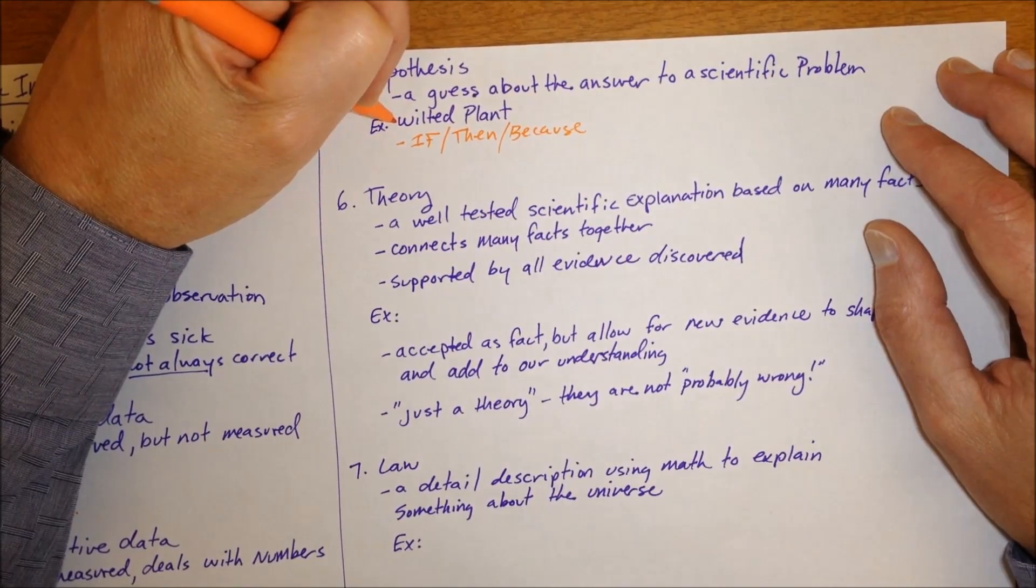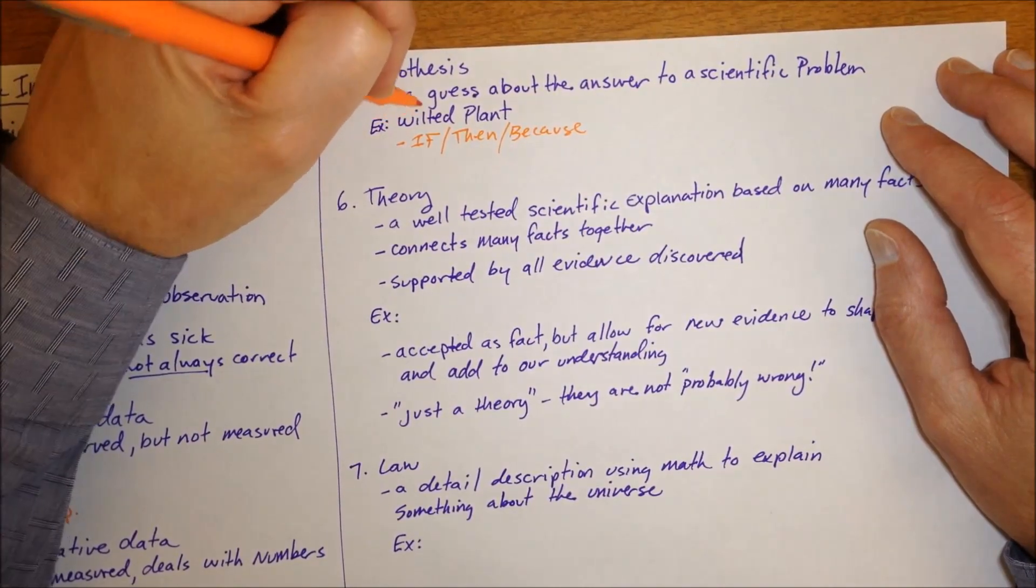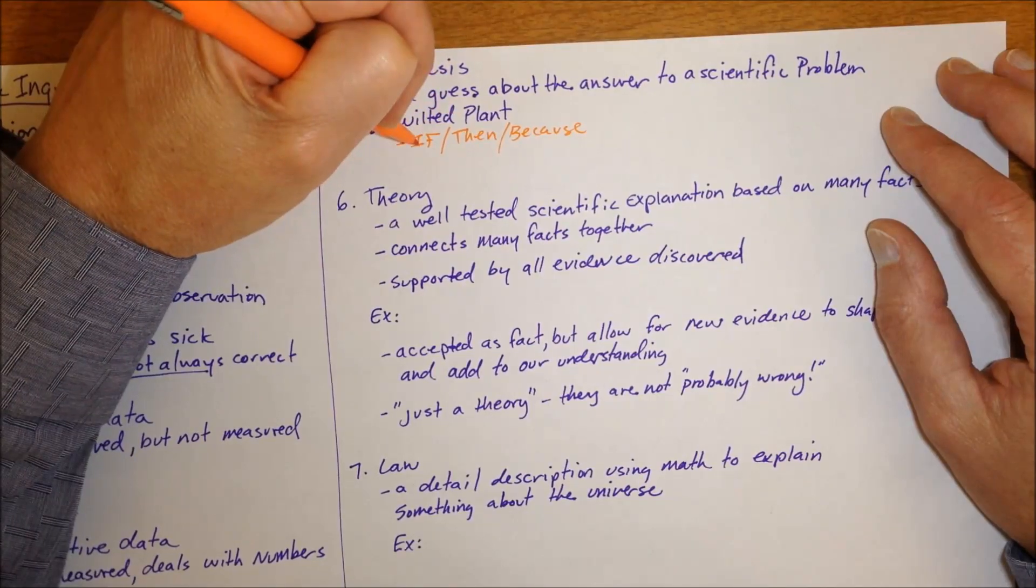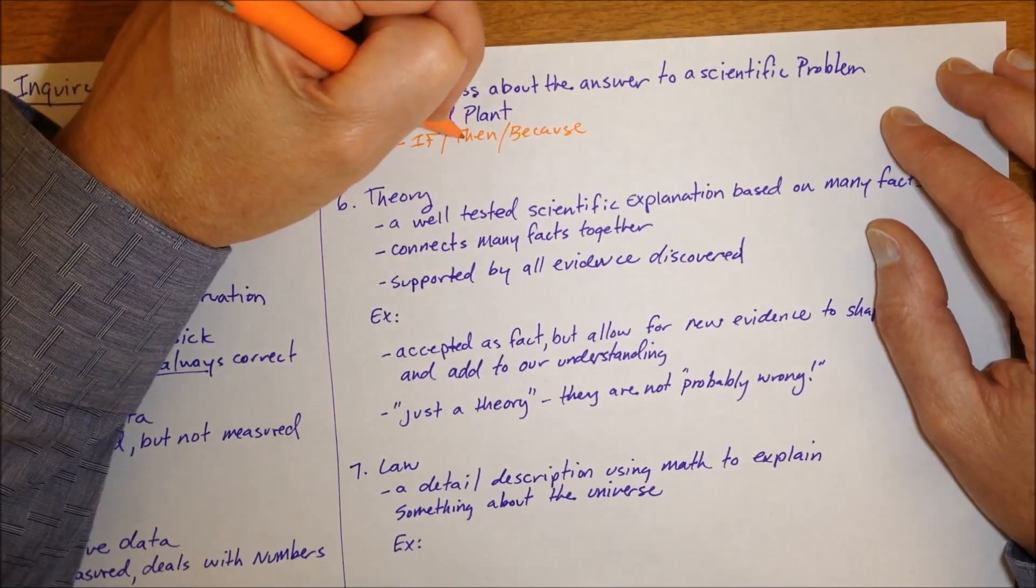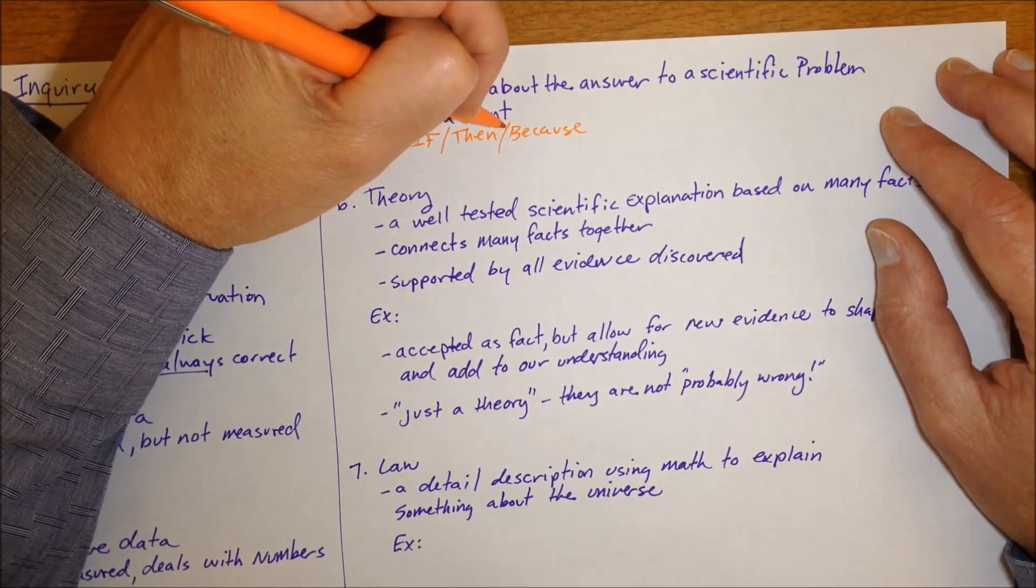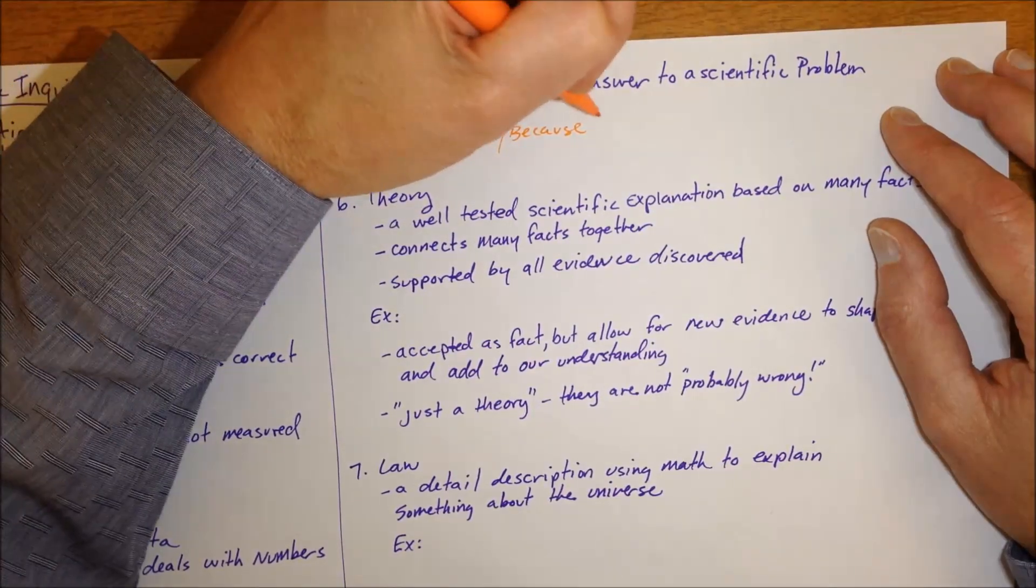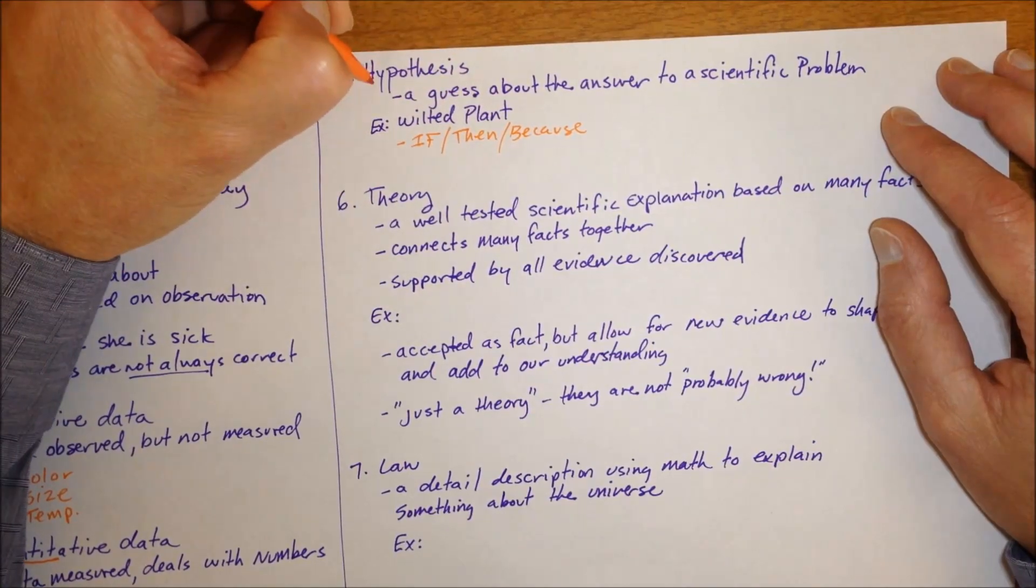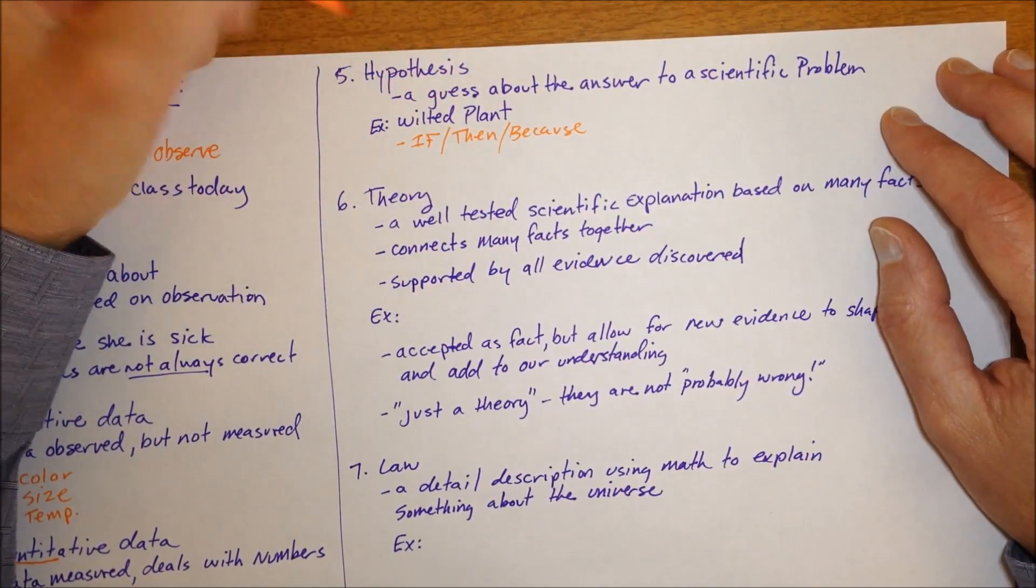So if I was to make a hypothesis about a wilted plant needing water, it might sound like this. If water is given to the plant, then it will grow and be healthy because one of the requirements for the life of plant is water. So if, then, because statements make up our guesses about the answer to the problem.